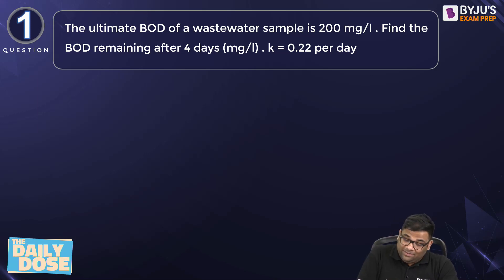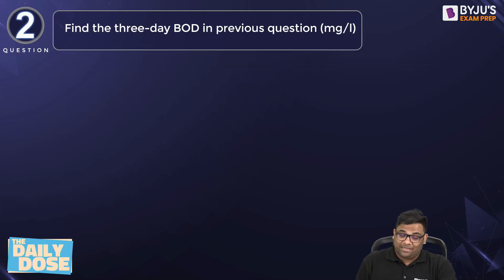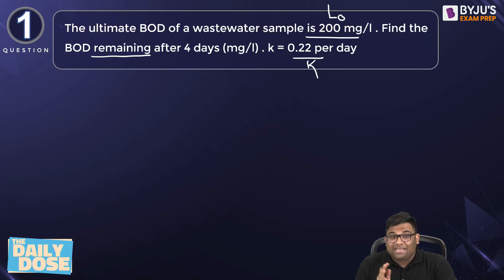So first question I have given is BOD remaining. The ultimate BOD is given and the k is given. So first question is BOD remaining. And second question is the 3 day BOD, means the BOD consumed in 3 days. Earlier one is BOD remaining after 4 days. So solve these 2 questions and mention the answer in the comment section.